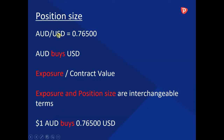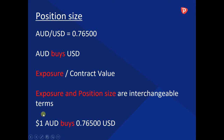This is just a recap from our previous video where Aussie is trading at 76.50. Aussie buys US dollars. Aussie is your exposure, and US dollars is your contract value. Exposure and position size are interchangeable terms. 1 AUD in our example would buy 0.765 US dollars, so 1 AUD is your exposure.